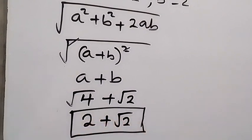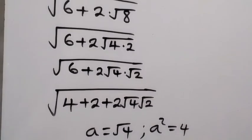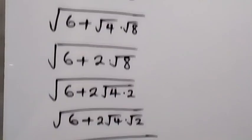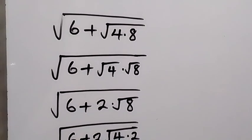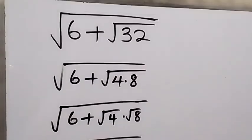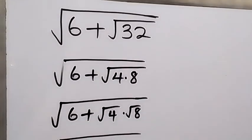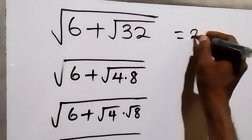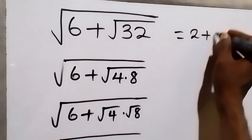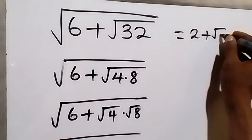Root 4 is 2, so we have 2 plus root 2. Therefore, the simplified form of the expression is 2 plus root 2.